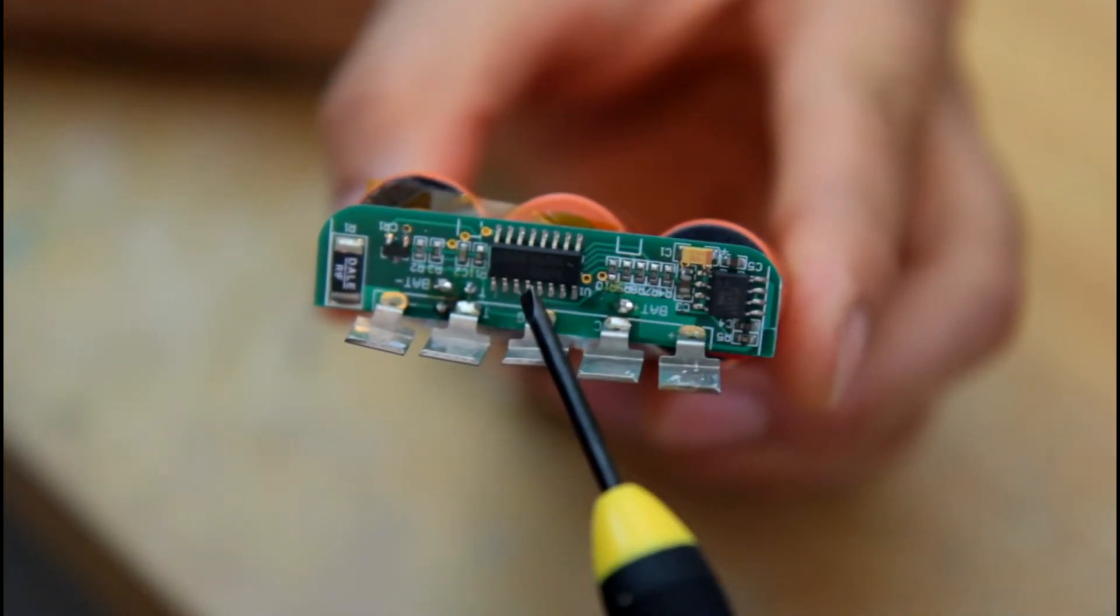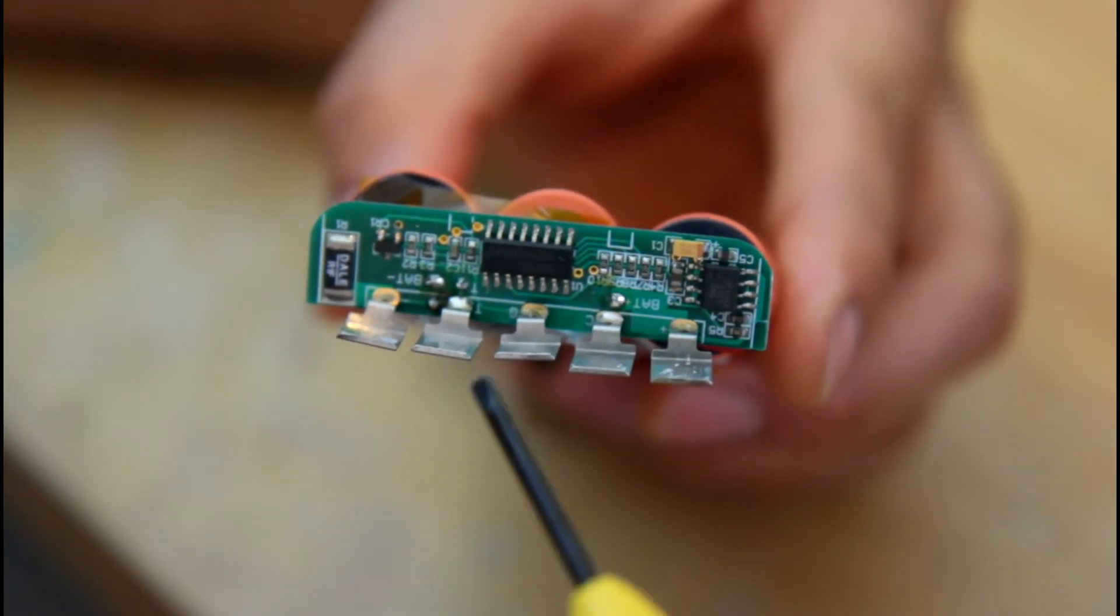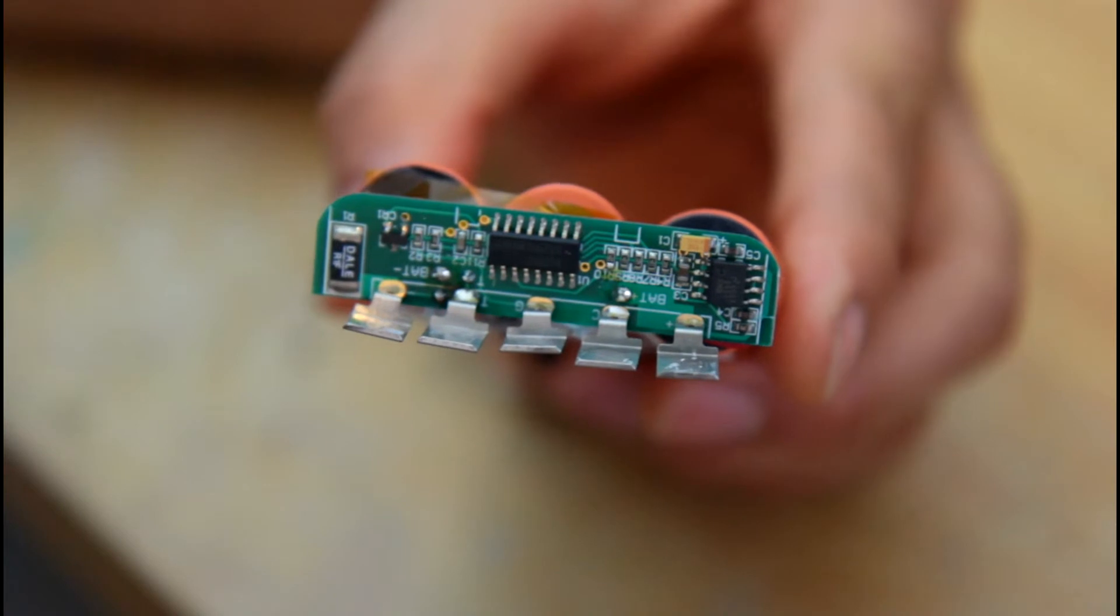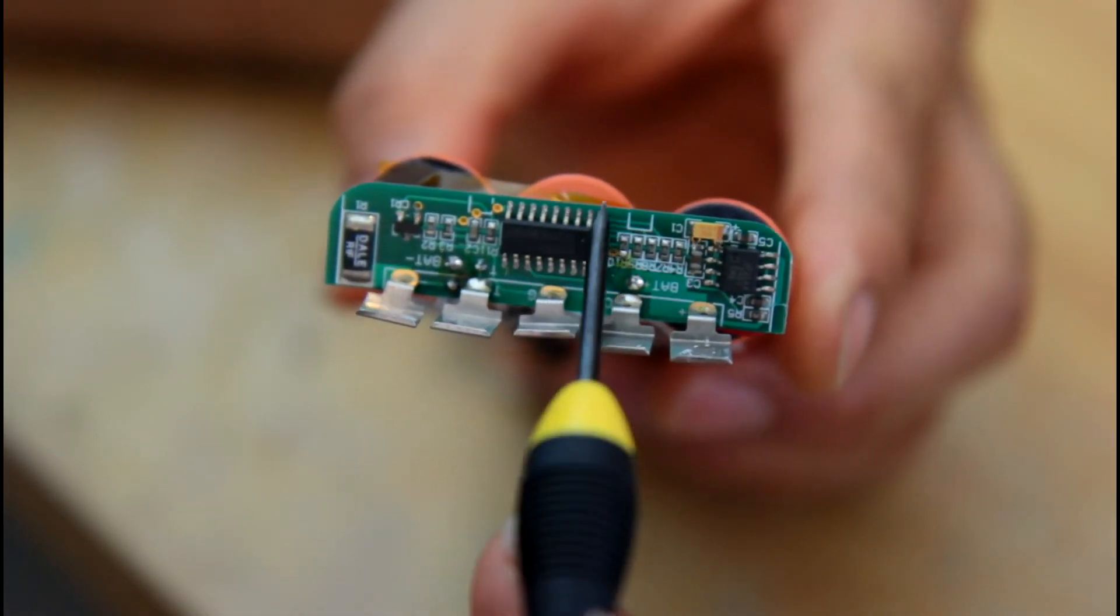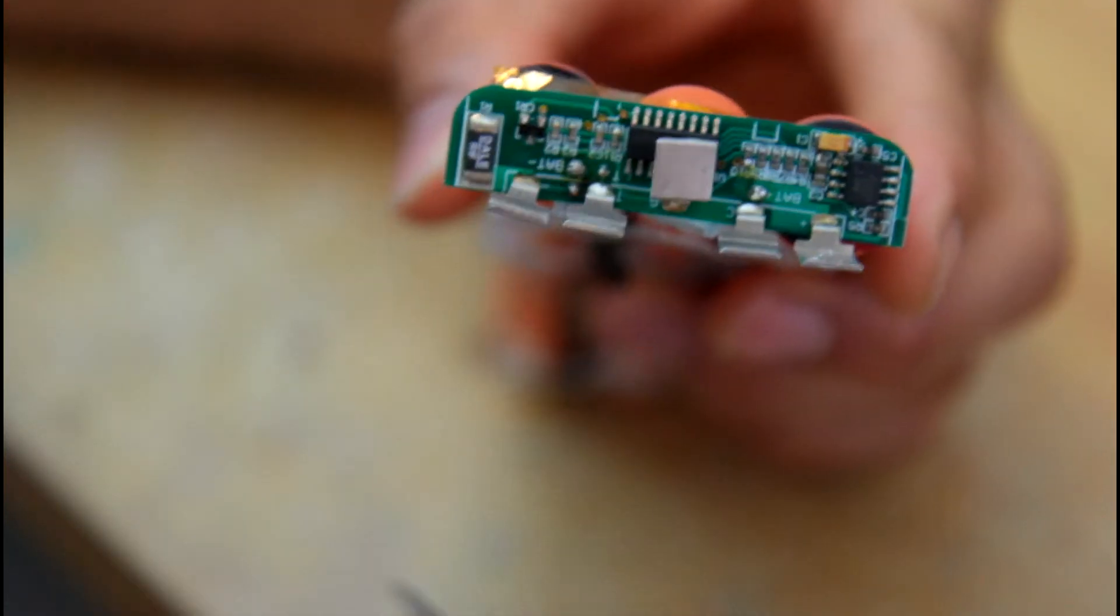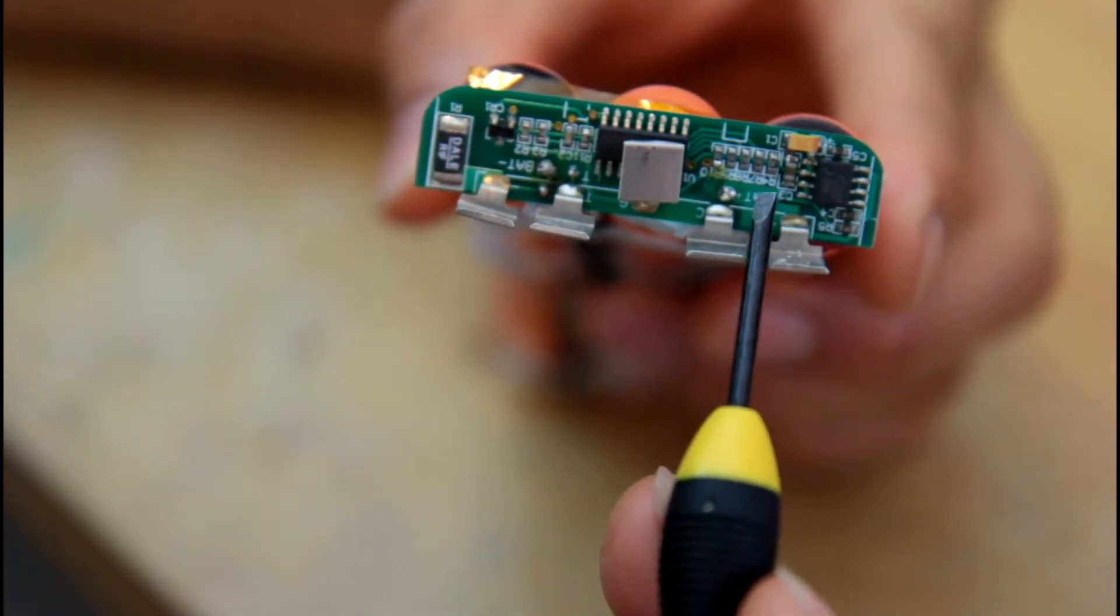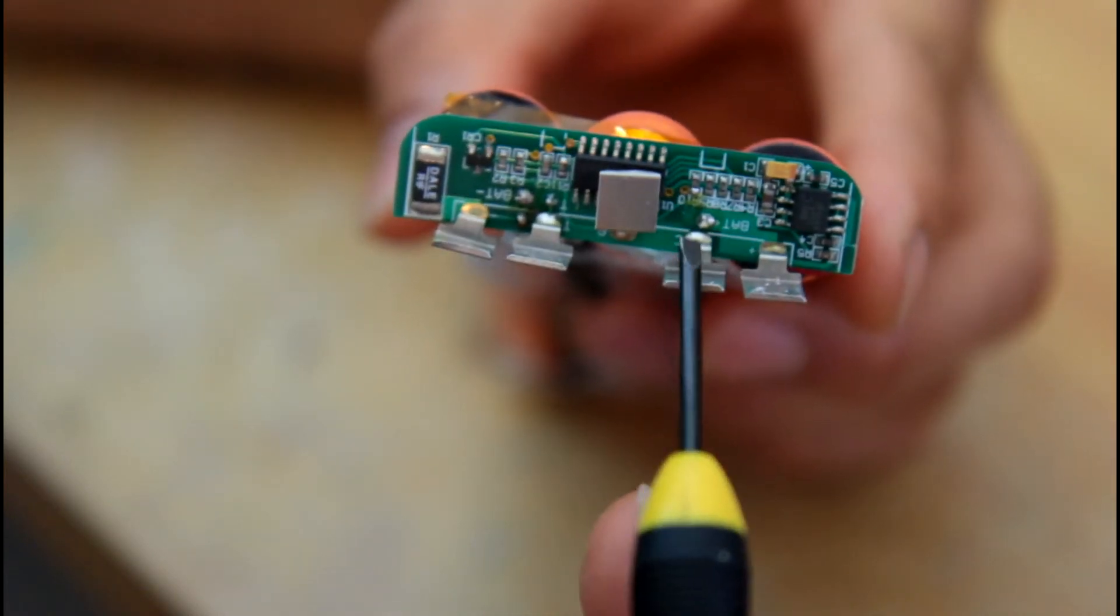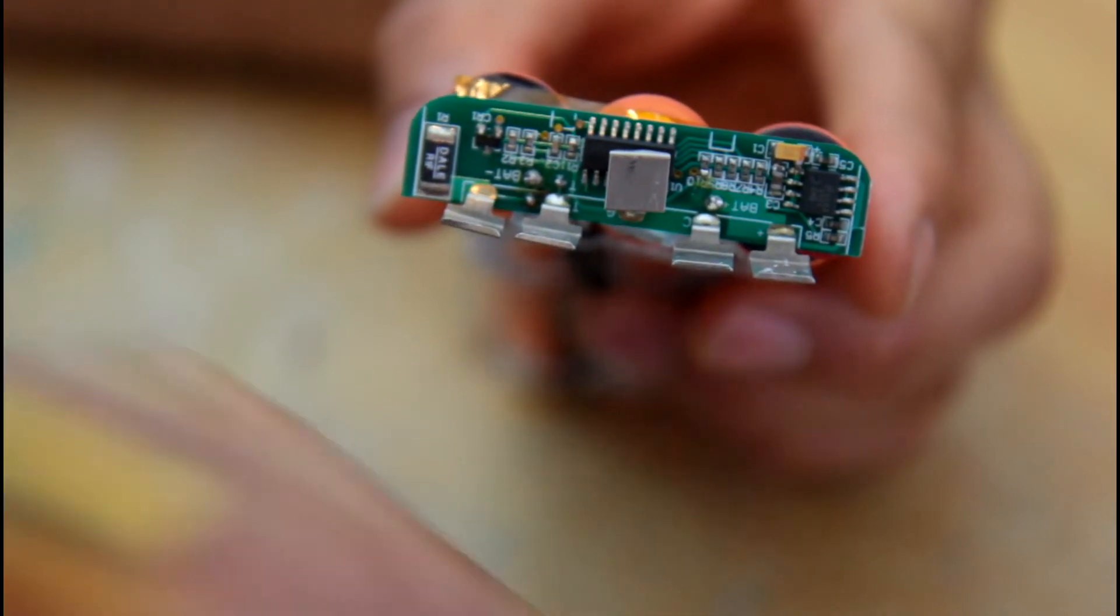And basically this thing looks at the discharge cycle from full to empty. And each time will give you more accurate estimate of how full is the battery. And as you can see, all these are all the terminals that communicate with the load. And in this case, the load is the graphical multimeter fluke.